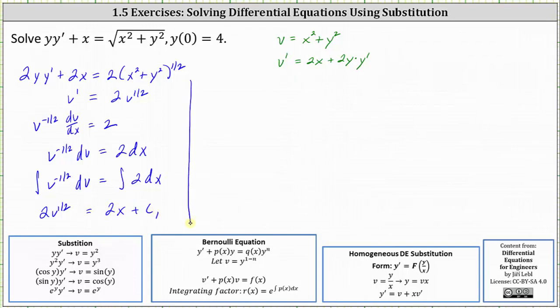And now we need to solve for v. Let's first multiply both sides by one-half, which gives us v to the one-half equals x plus one-half c sub one. Let's let one-half c sub one be equal to c.